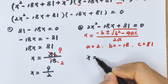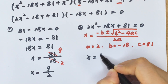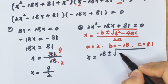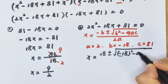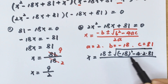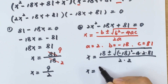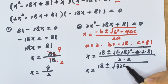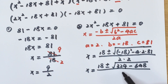So x equals negative b, which is 18, plus or minus square root of (b squared minus 4 times 2 times 81) divided by 2 times 2. That gives x equals 18 plus or minus square root of (324 minus 648) divided by 4.